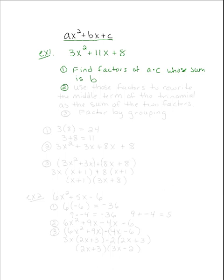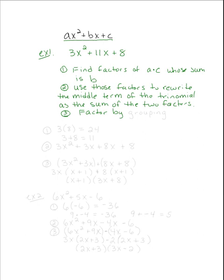Once we do that, that takes us to Step 2: we are going to use those two new factors to rewrite the middle term of the trinomial as the sum of the two factors. And Step 3: we are going to factor by grouping. So these are our three steps.